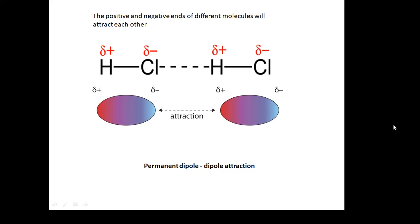And so, these molecules can attract each other all of the time. The positive and negative ends of different molecules will attract each other. Looking at this, hydrogen chloride has a positive and a negative end. And so, the negative end of one molecule will attract the positive end of another molecule. So, it's a permanent dipole-dipole attraction.